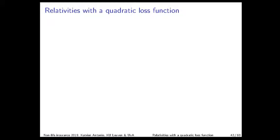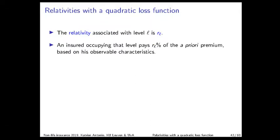This video will explain how to calculate the relativities in a given bonus-malus scale when assuming a quadratic loss function. The relativity associated with level L in the scale is denoted as RL. An insured who is occupying that particular level in the scale pays an amount of premium equal to RL percent of the a priori premium, determined from the a priori pricing model based on the observable characteristics of the policyholder.